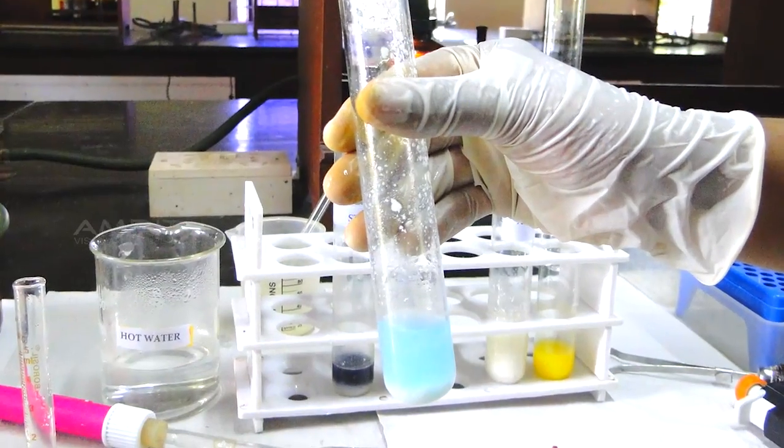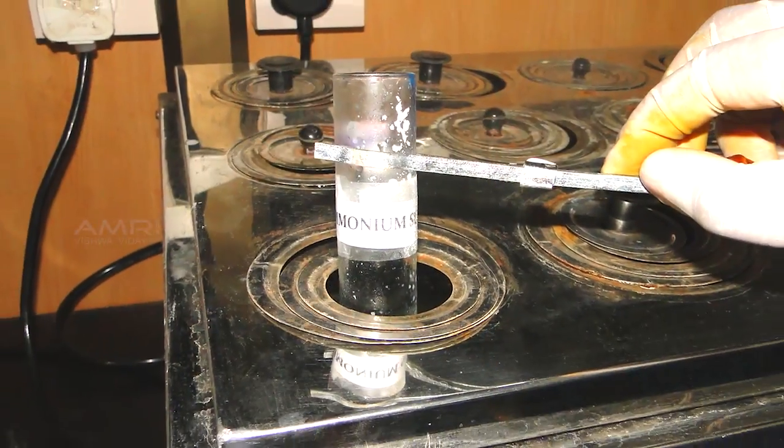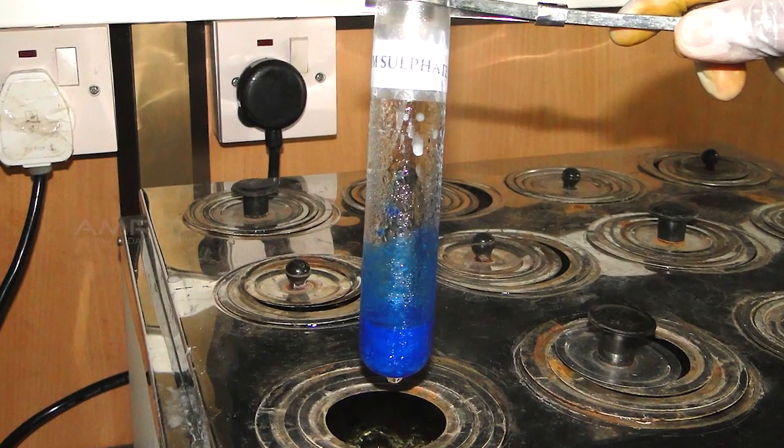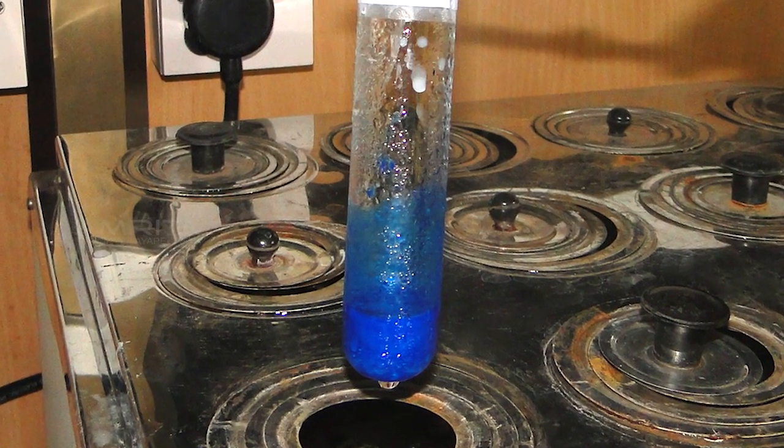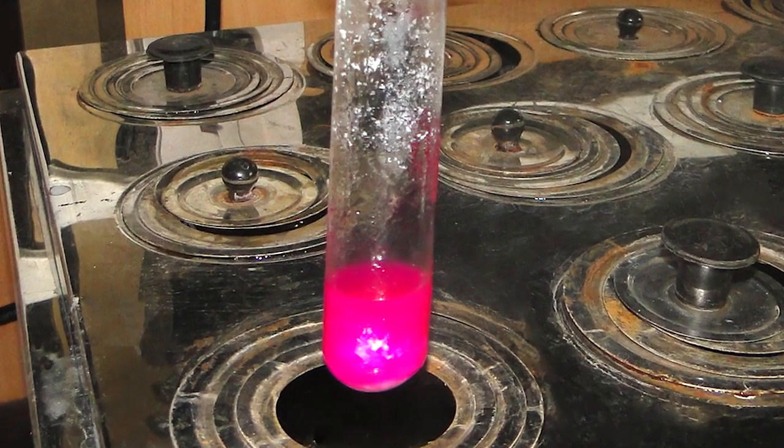The milk solution turns light bluish color. Keep this test tube in a water bath at 100 degrees Celsius for 20 seconds. After 20 seconds, the color turns a deep blue which indicates the presence of ammonium sulphate. If the solution turns pink, it indicates absence of ammonium sulphate.